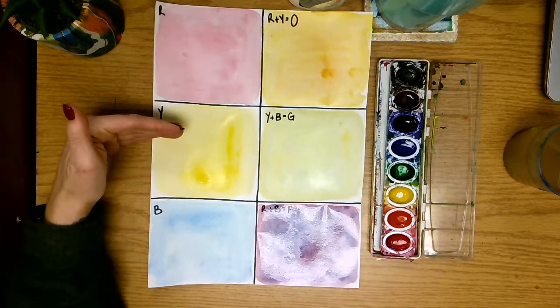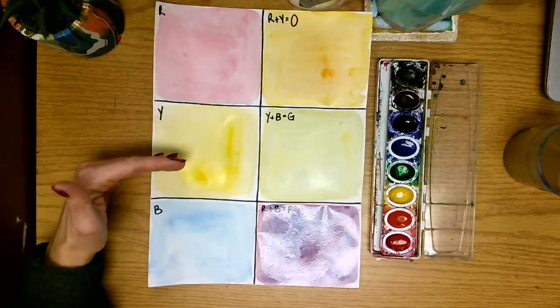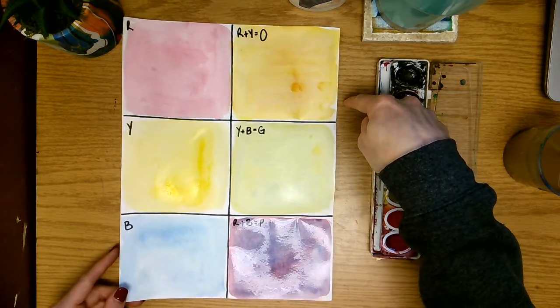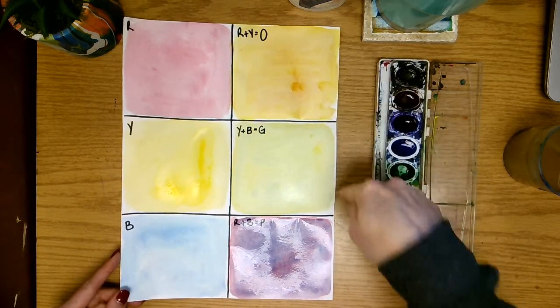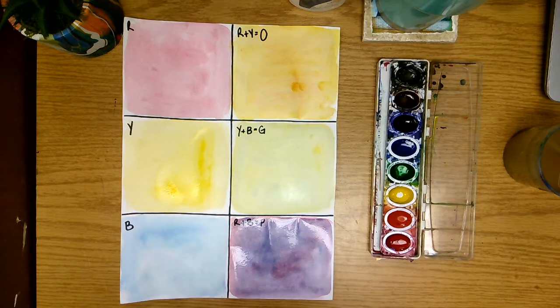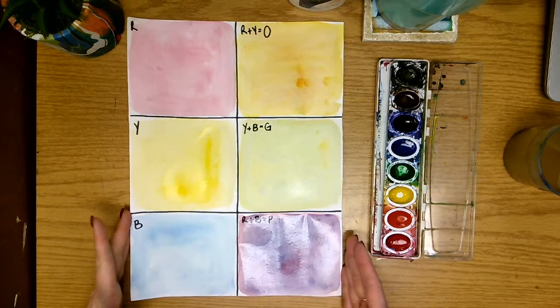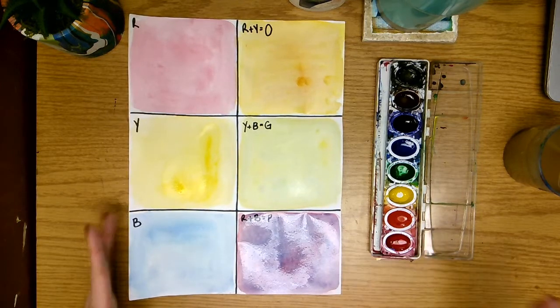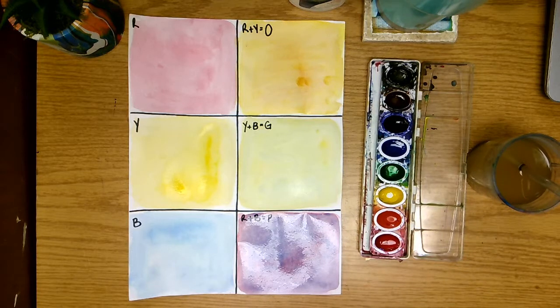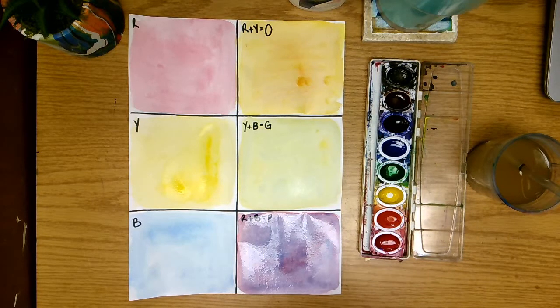So we have our primary colors on this side. Red, yellow, and blue. And then we have made our secondary colors. Orange, green, and purple over on this side. And that will be it for today. When you finish, we will put this in a drying rack. We will get our paint and our water bucket cleaned up. And we'll be ready for our next part of our project next time.